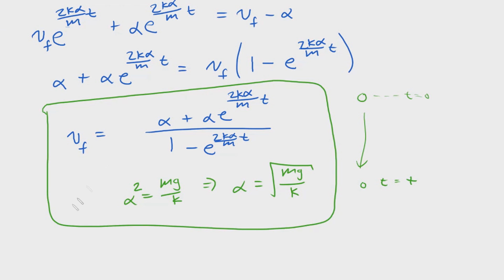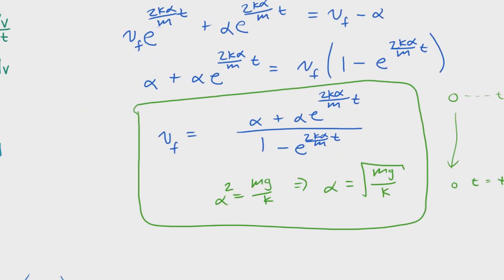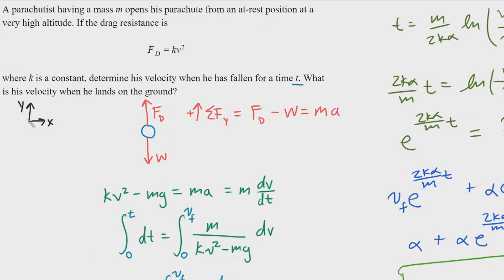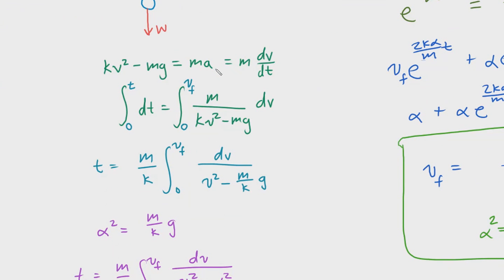Let me quickly go over what we just did, although this problem was mostly a calculus problem. First, we drew the free body diagram and defined our axes. We summed the forces in the Y direction — drag going upward and weight pointing downward — setting mass times acceleration equal to the net force. We recognized acceleration as dV/dt, separated the differentials, and set up the integral with limits from time 0 to T and velocity 0 to VF, since the parachutist starts from rest.